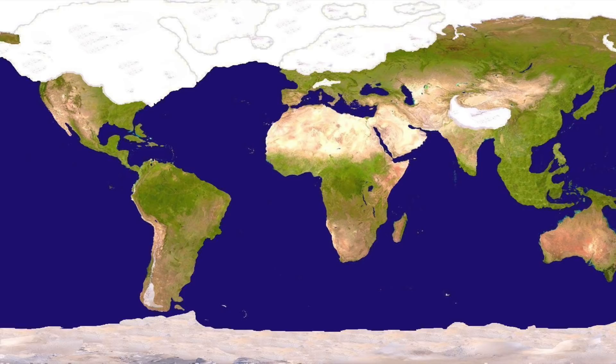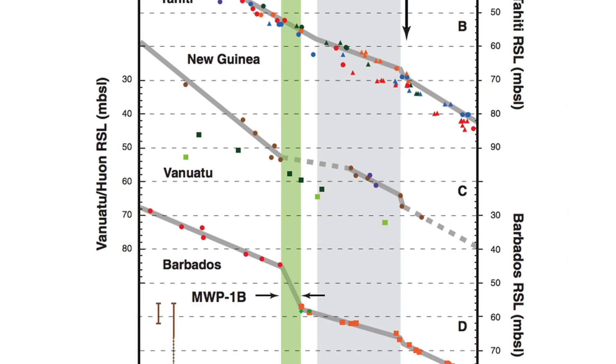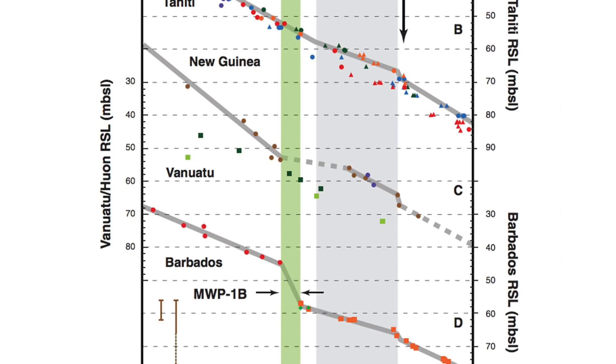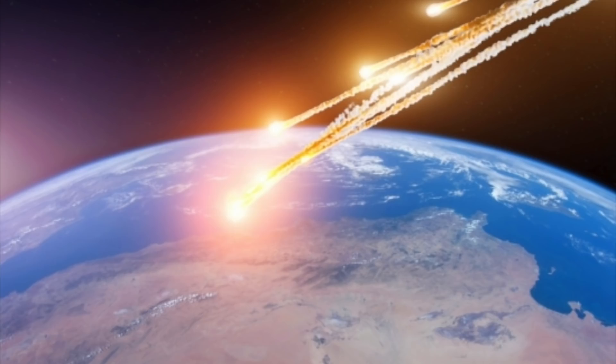Unless we can analyse the sediments of the ancient shorelines from 12,800 years ago — those now 64 metres below sea level — we can only really guess if this 3 metre rise was violent and cataclysmic, or whether it was gradual, being 6 centimetres per year for 50 years.